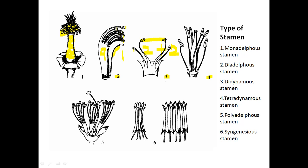In the fourth diagram, there are six stamens: two short and four long. Four long stamens and two short stamens — this kind of arrangement is known as tetradynamous. These stamens can be found in the Brassicaceae family, also called the mustard or hardal family.